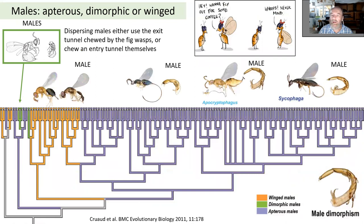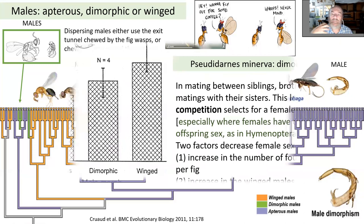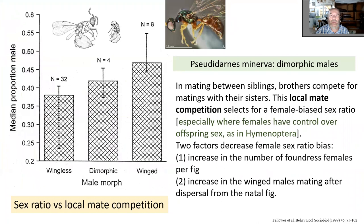Another exception to the general pattern is the wing condition of males. The vast majority of species have only wingless males. But there are species with winged males, and some that are dimorphic. Wingless males — both for pollinators and non-pollinators — means all fig wasps mate inside their native fig. In some cases, only one female enters the fig and is responsible for all the eggs there, so all mating is between brothers and sisters.